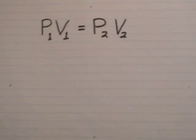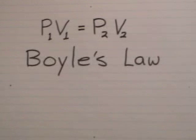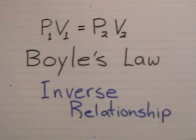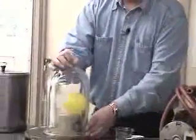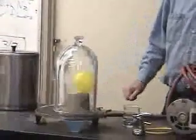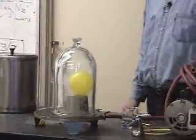While Marty relaxes and recovers, let's take a look at the gas law that describes the relationship between pressure and volume. Taking an initial pressure times an initial volume, that's equal to a secondary or final pressure and volume. With a little algebra you can solve for either P or V. This is called Boyle's Law. As pressure goes up, volume goes down, and vice versa — it's an inverse relationship.